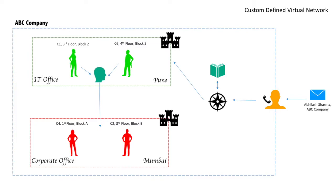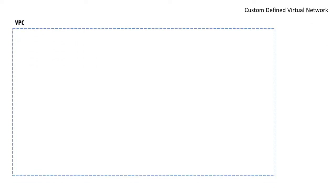In both offices there is a security mechanism — a network-level security mechanism that tells you what is allowed and what is not. Additionally, all people have their own individual security mechanism. Now, we will relate this to VPC. VPC is a custom-defined virtual network. We will create a VPC for ABC Company.